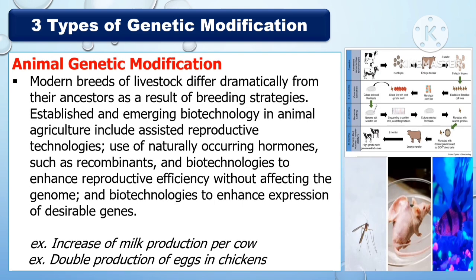Another type of genetic modification is animal genetic modification. Modern breeds of livestock differ dramatically from their ancestors as a result of breeding strategies. Established and emerging biotechnologies in animal agriculture include assisted reproductive technology, use of naturally occurring hormones such as recombinants, biotechnologies to enhance reproductive efficiency without affecting the genome, and biotechnologies to enhance the expression of desirable genes. Examples include increasing milk production per cow and doubling egg production in chickens.